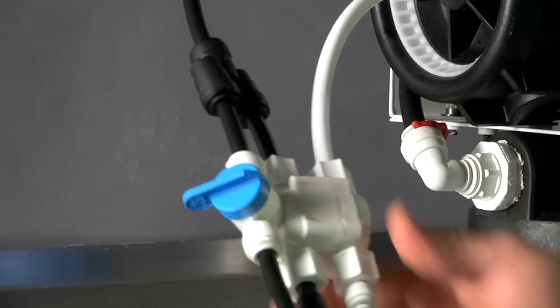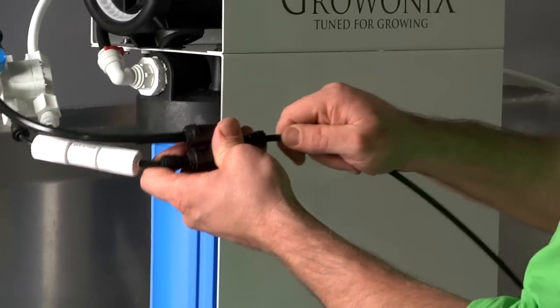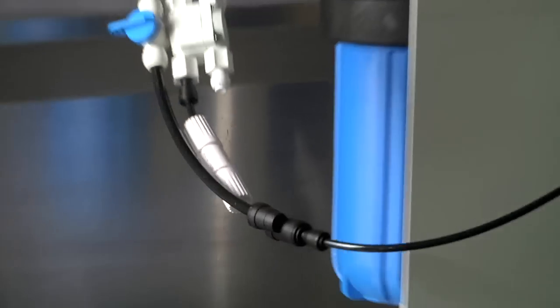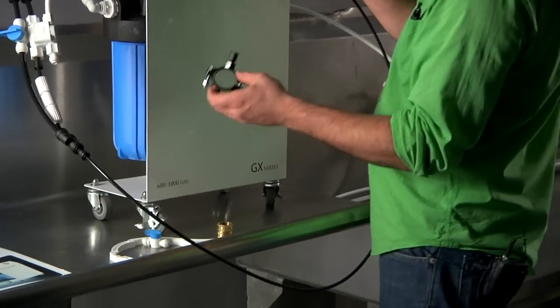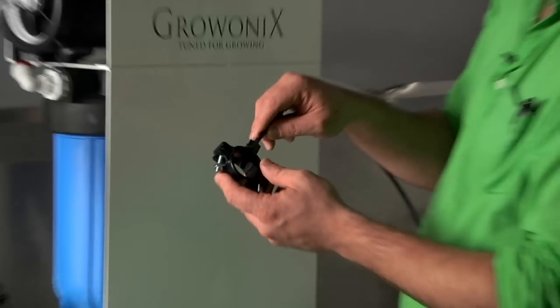Now we're going to hook up drain tubing. Always follow the black line on any Grow Onix GX product. Here's my drain tube. I'm just going to run it into the sink for this demonstration, but remember, it goes to your drain saddle. If you want to look at our earlier units, we'll demonstrate how to hook up a drain saddle.